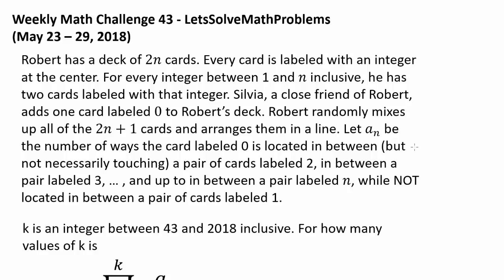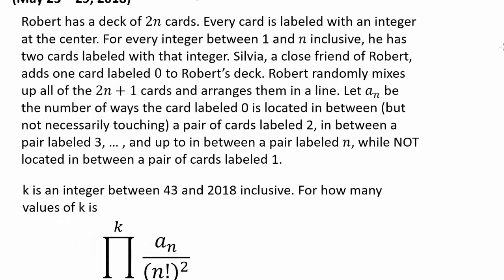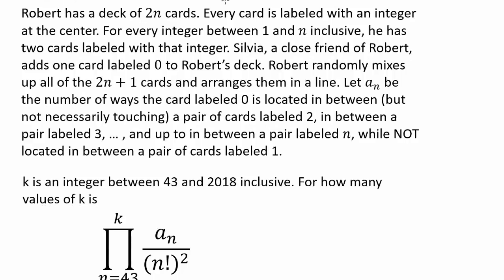We have a pretty long weekly math challenge, so let's read it carefully and try to decipher what the meaning of all of these numbers mean — all of these 2n and this product. Robert has a deck of 2n cards. Every card is labeled with an integer at the center. For every integer between 1 and n inclusive, he has two cards labeled with that integer, giving us 2n cards. Silvia, a close friend of Robert, adds one card labeled 0 to Robert's deck.